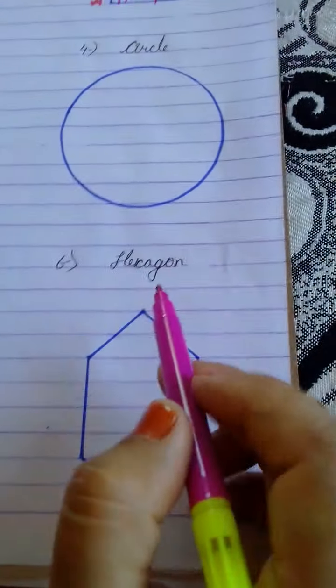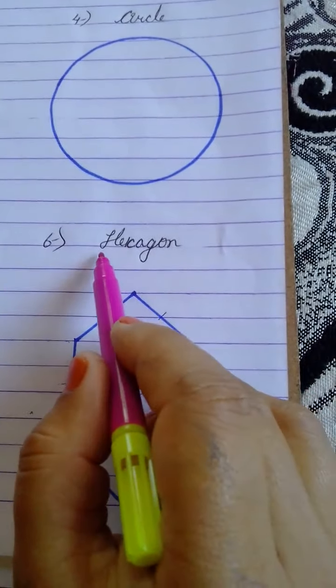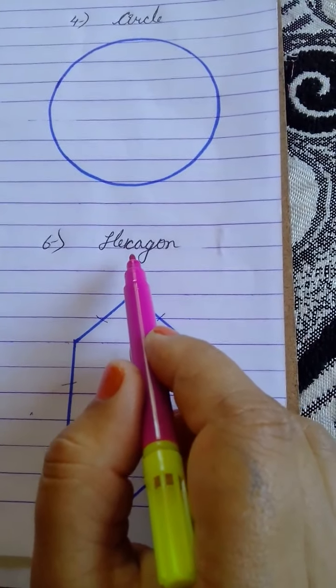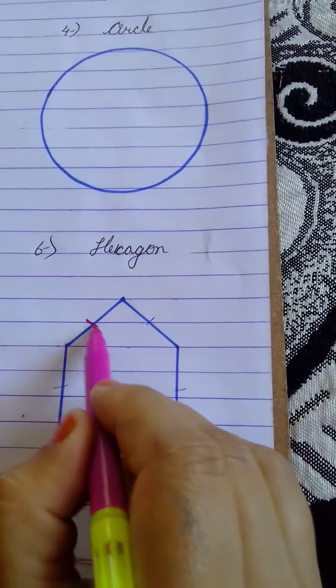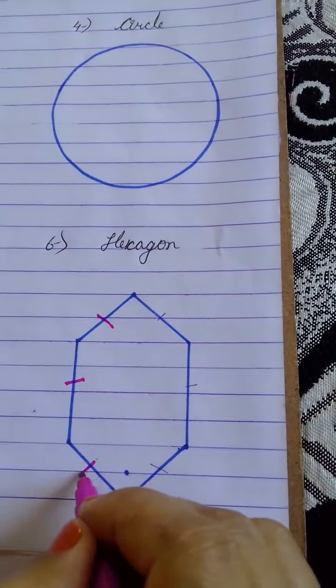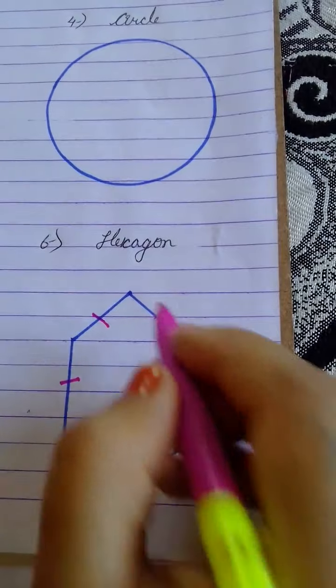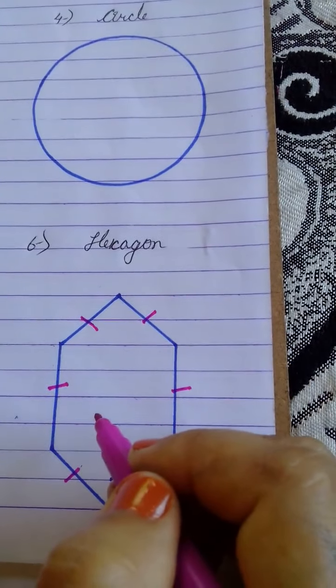Next shape is hexagon. Hexa means six. That means it is a shape which has six sides. One, two, three, four, five and six.